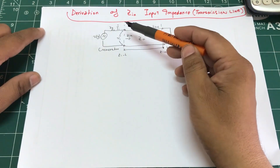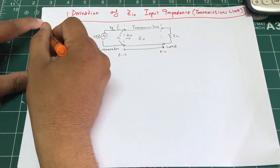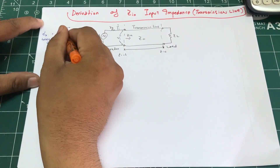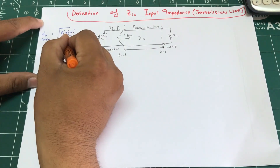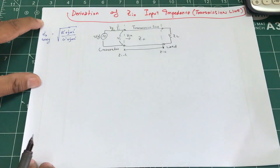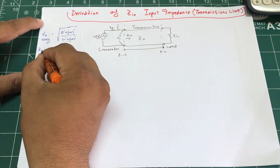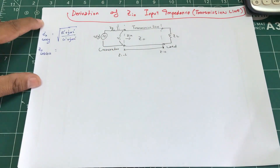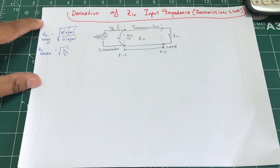The input impedance of a transmission line — if we recall the characteristic impedance for a lossy line from the last video, it was Z₀ = √((R' + jωL') / (G' + jωC')). For a lossless line, since there is no R, it simplifies to just √(L/C).